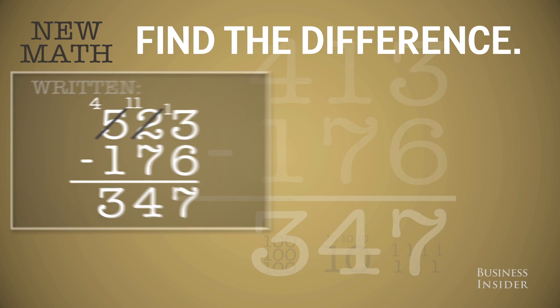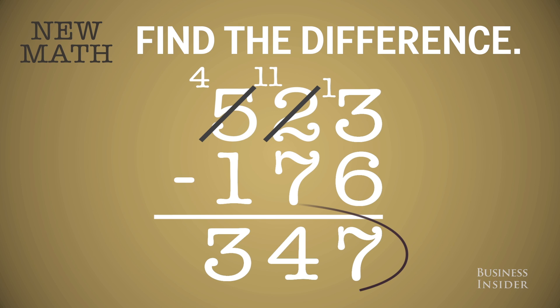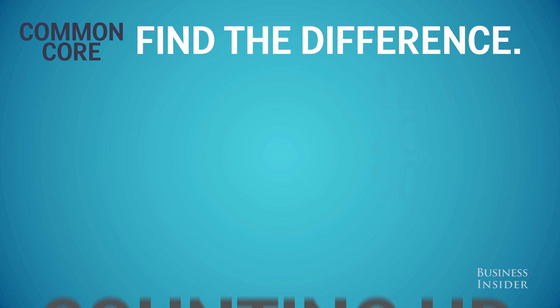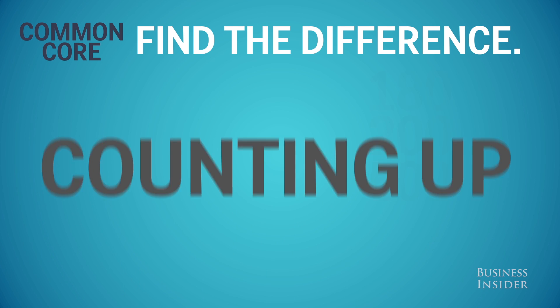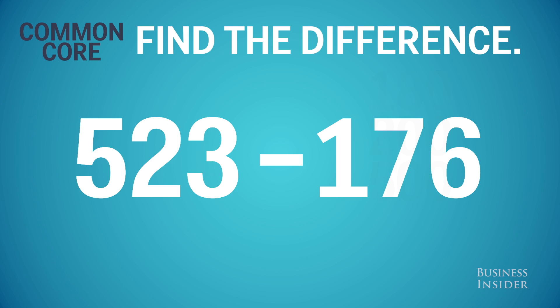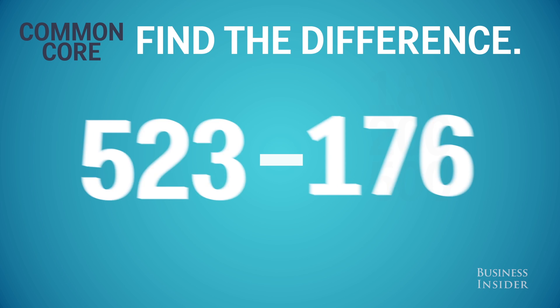But now, once again, we're saying this is just an algorithm, and we want students to understand what they're doing. So here comes the common core. But this time, it actually does look different. The idea is to subtract the way you would count change in your head. You start with the smaller number and add up to friendly or larger numbers.